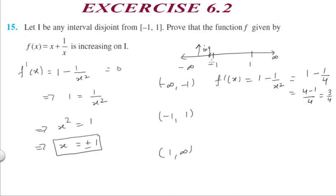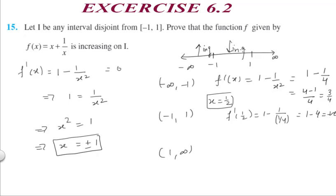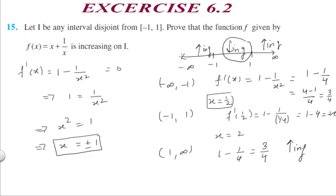For 1 to infinity, take x = 2: f'(2) = 1 - 1/4 = 3/4, which is positive — increasing. So except for the interval (-1, 1), the function is increasing in all other intervals, whether x < -1 or x > 1. This is exactly what we had to prove for Question 15.